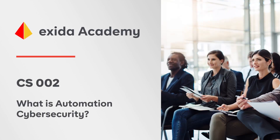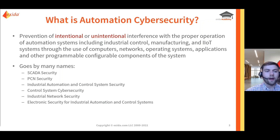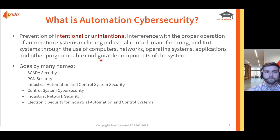Before we dive into the core concepts for automation cybersecurity, it's helpful to first define a basis. By definition, this is the prevention of intentional or unintentional interference with the proper operation of automation systems — anything from industrial control, smart manufacturing, industrial internet of things, essentially any control network that is modifying physical equipment using a computer-based network or other programmable or configurable components. Automation cybersecurity goes by many different names.